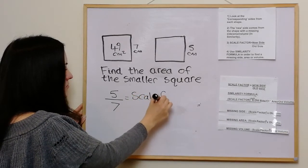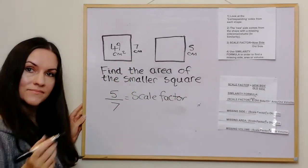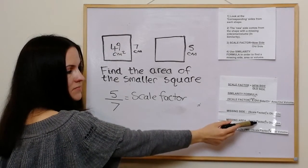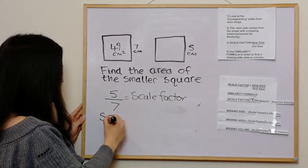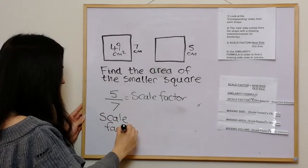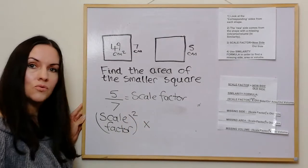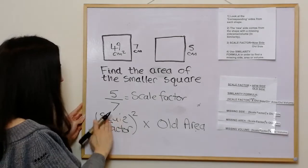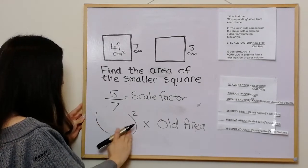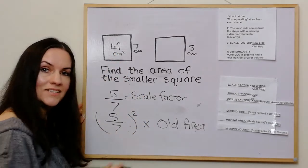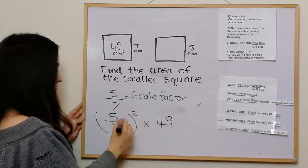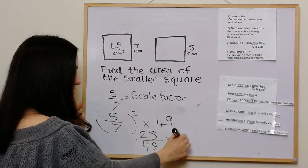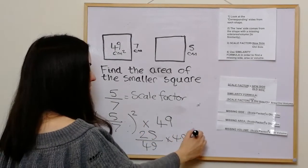We've got a missing area, so we use the missing area formula: scale factor squared times the old area. The scale factor is 5 over 7, and the old area is 49. So it's 5 over 7 squared, which is 25 over 49, times 49. The 49s cancel out and the answer is 25 centimetres squared.